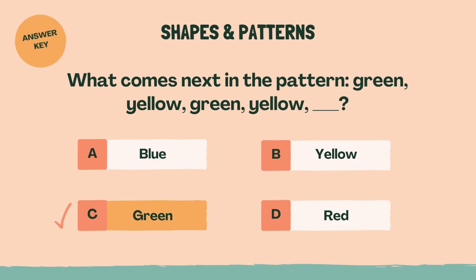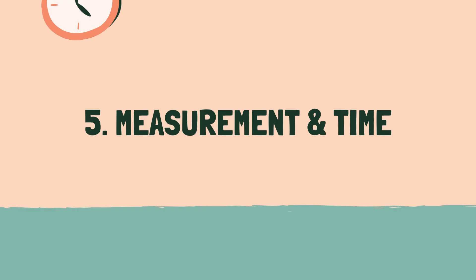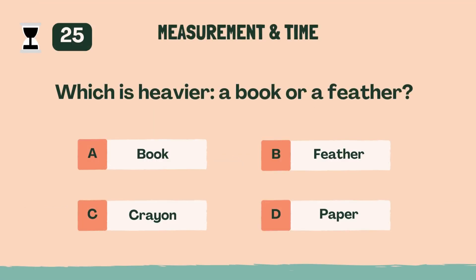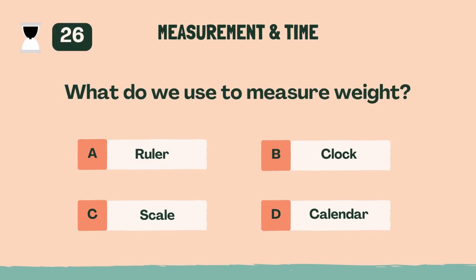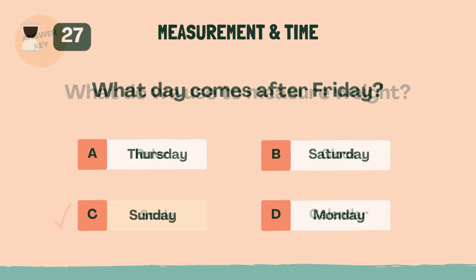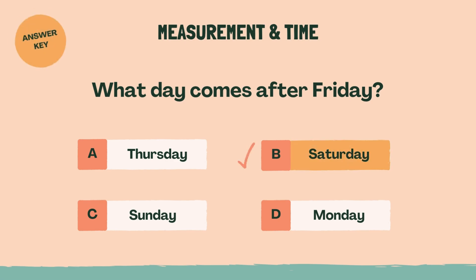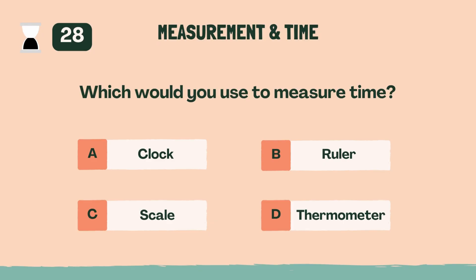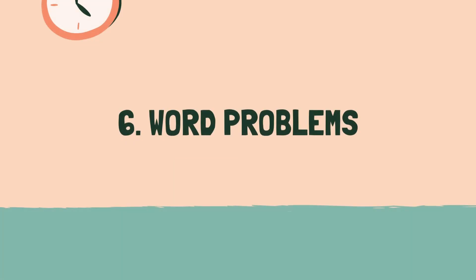Well done! Let's move on to the next category. Category 5, Measurement and Time. 3, 2, 1, go. Which is heavier a book or a feather? A, book. What do we use to measure weight? C, scale. What day comes after friday? B, saturday. Which would you use to measure time? A, clock.